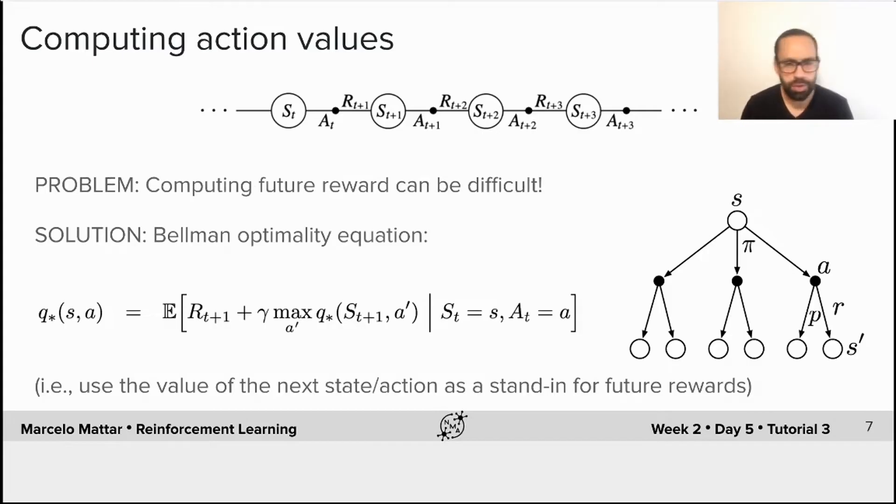All right, so action selection should depend on total future reward instead of immediate rewards. Unfortunately, estimating total future reward is tricky because it depends on a lot of things, such as how the environment will react and also including the agent's own future actions.